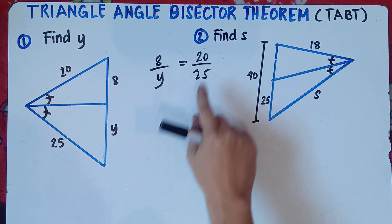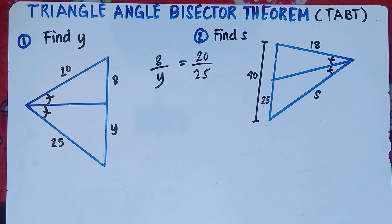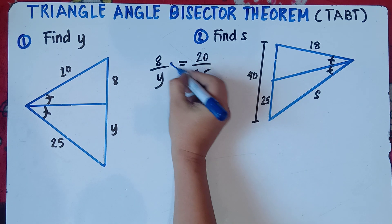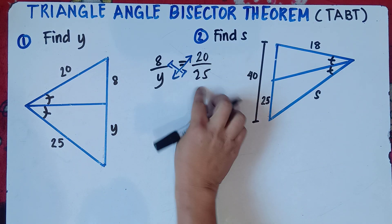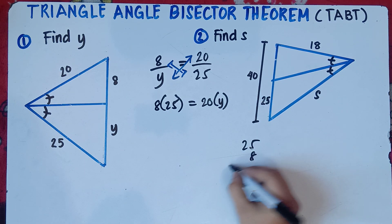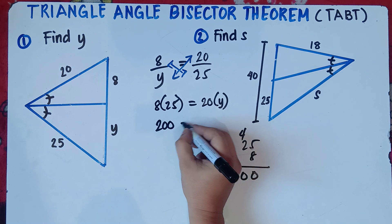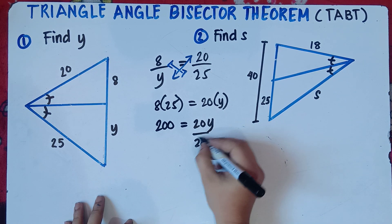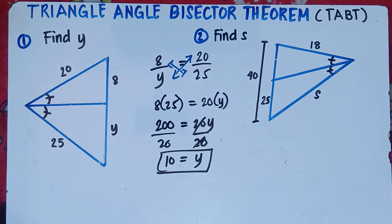Before doing the cross multiplication, always check the fraction if you can reduce. For 20 over 25, reduce by 5: 20 divided by 5 is 4, and 25 divided by 5 is 5. So 8 over Y equals 4 over 5. Cross multiply: 8 times 5 equals 40, equals 4Y. Divide by 4, and Y equals 10. Both methods — direct cross multiplication (8 times 25 = 200 = 20Y, so Y = 10) and reducing first — give the same answer.